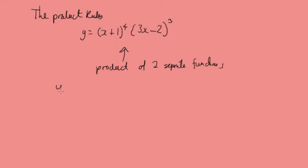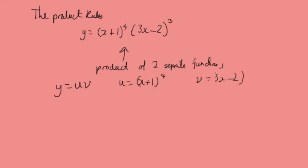The general form would be y equals some function u times some function v, where u would be (x plus 1) to the power 4, and v would be (3x minus 2) raised to the power 3.